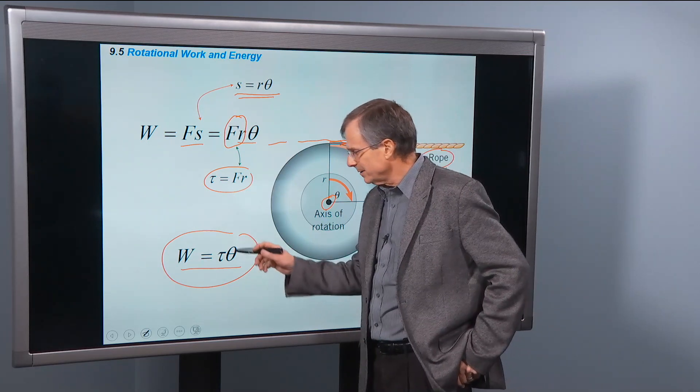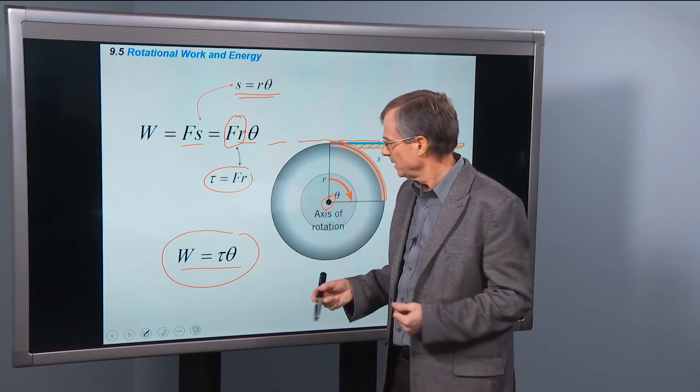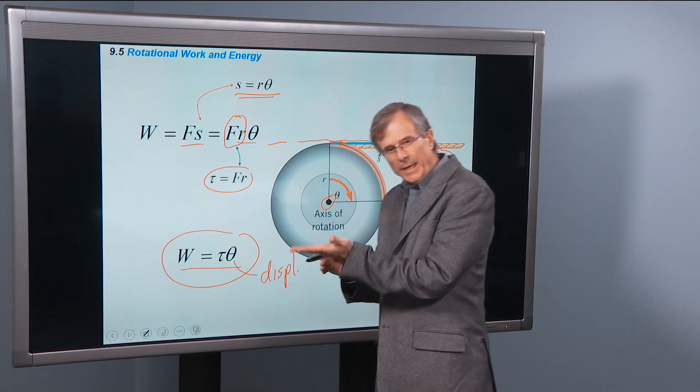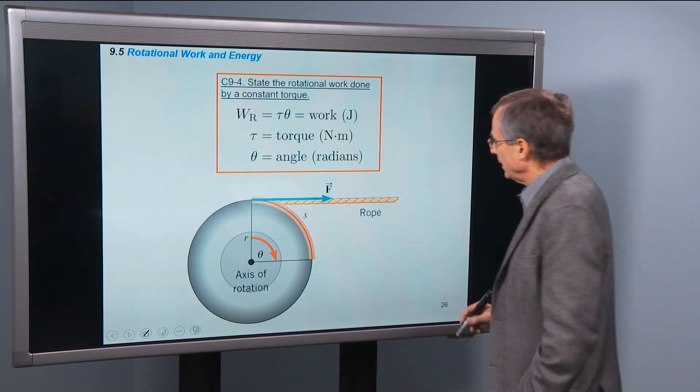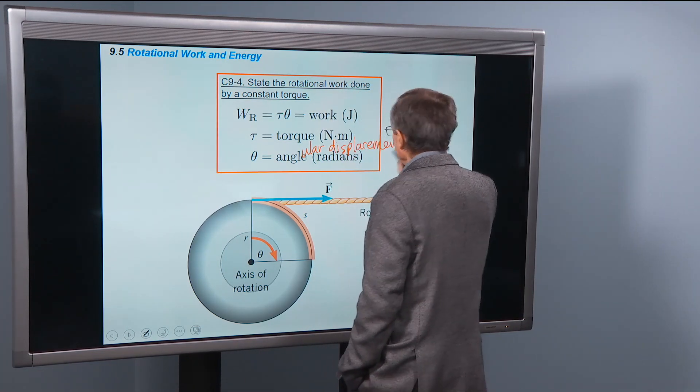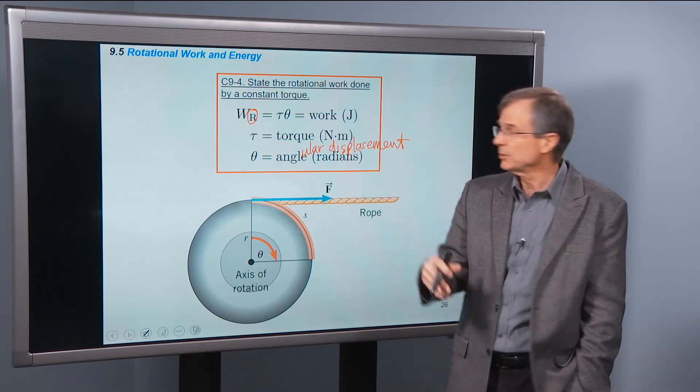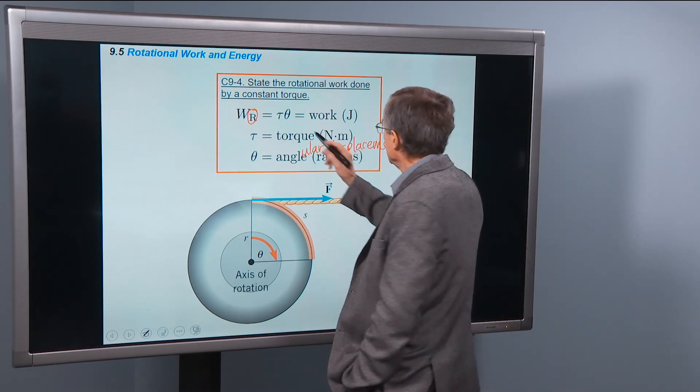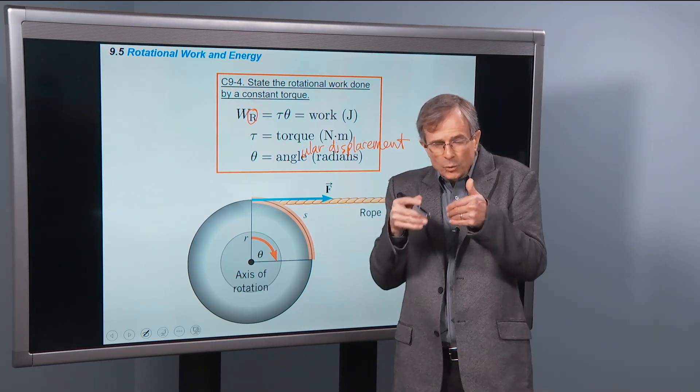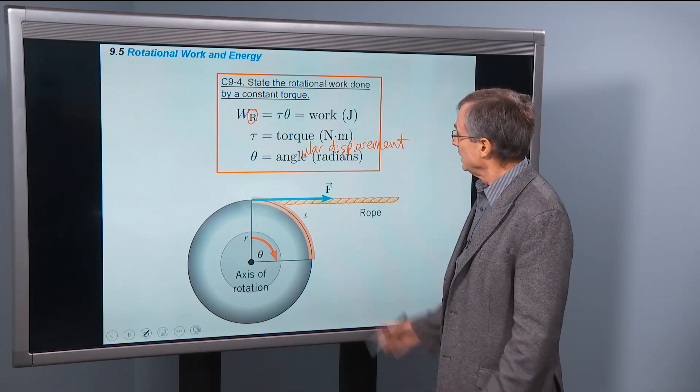So the work done is the torque times the angular displacement. And we actually use θ here, and the book uses θ. In the past we've talked about an angular displacement and denoted it by Δθ. In this case we're just using θ, but here θ really is the angular displacement. How much the angle has changed during the application of that force. And so here it is in a concept. The rotational work, we put this R here to remind us that it's rotational work rather than translational work. And it's equal to the torque applied, measured in newton meters, times the angle measured in radians. Remember, s equals rθ only applies if the angle is measured in radians. Same thing here. That angle's got to be in radians. And that's rotational work done.